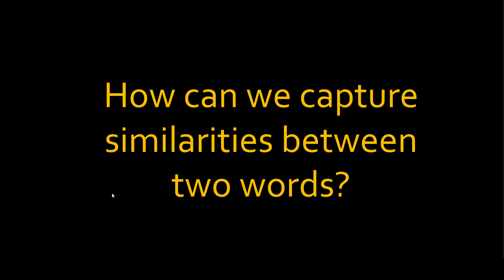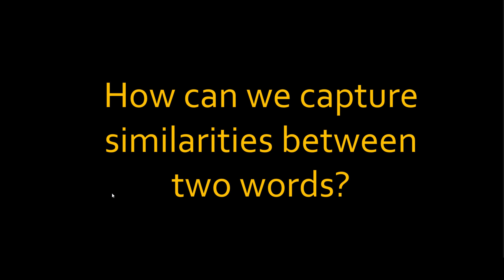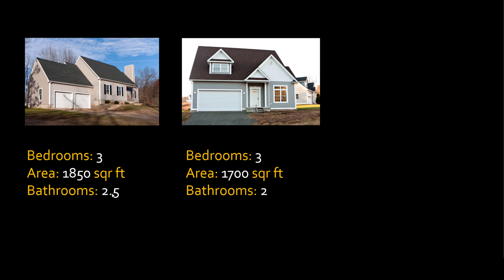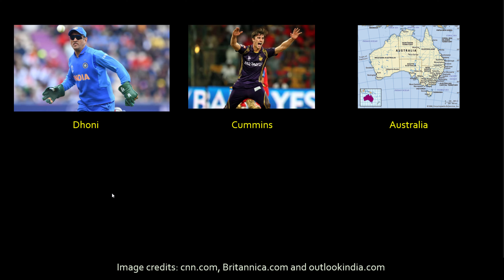The key question is: how can we capture similarity between two words? Cummins is a person and a cricket player; Mahmudullah is also a person and a cricket player — so they are similar. Australia and Cummins are not very similar. Think of it like comparing two homes: you look at features like bedrooms and area. If two homes share similar features, you can say they're similar. A much larger home would be dissimilar to a smaller one.